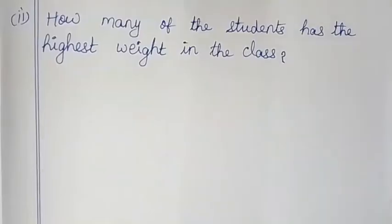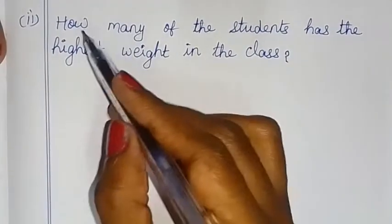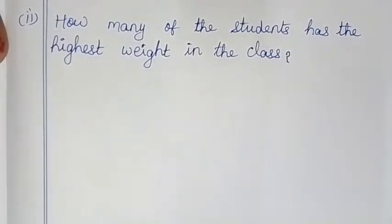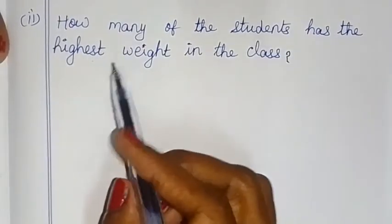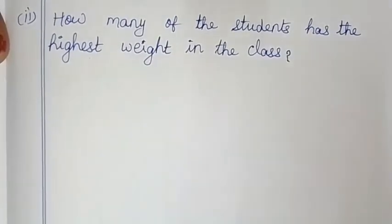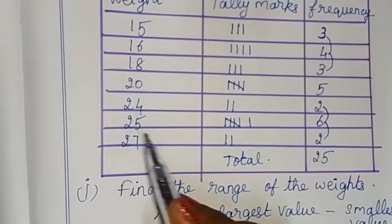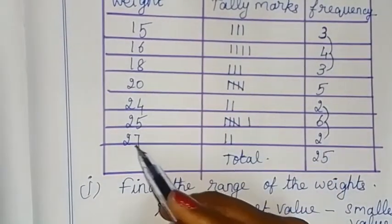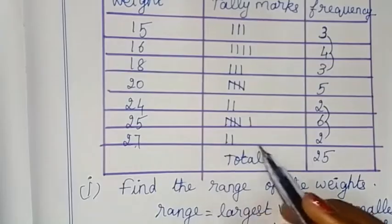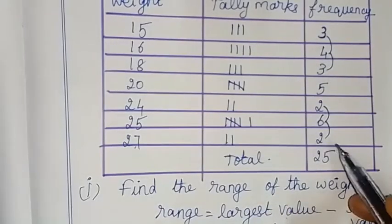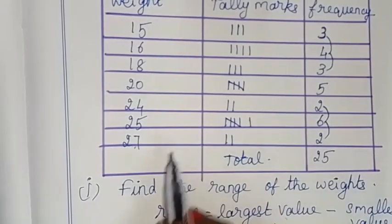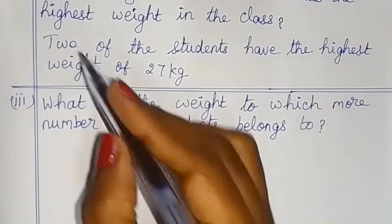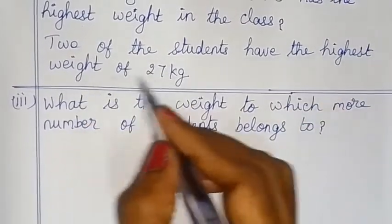Okay, let's look at the next question: how many of the students have the highest weight in the class? The highest weight is 27 kg, and 2 of them have the highest weight in the class. So 2 students have the highest weight of 27 kg.